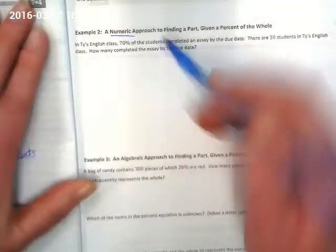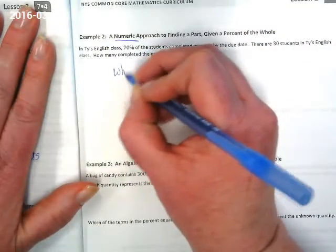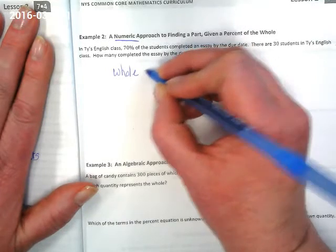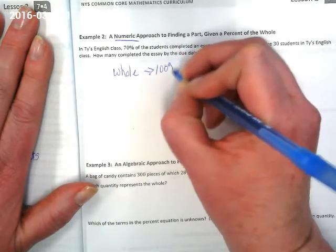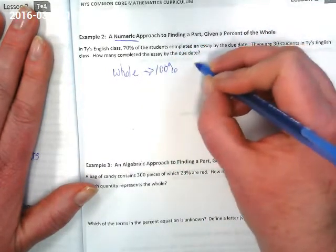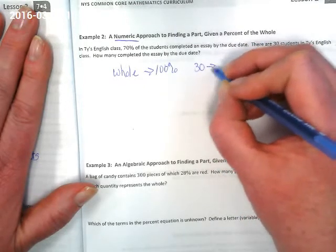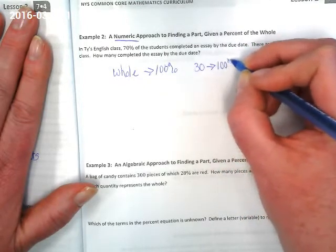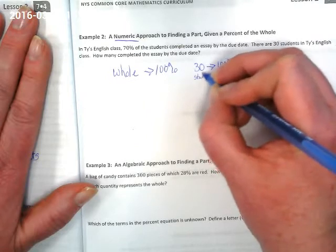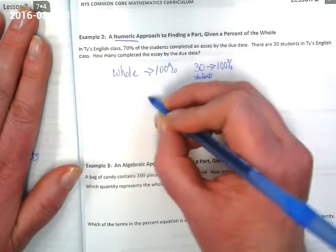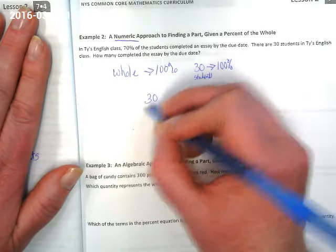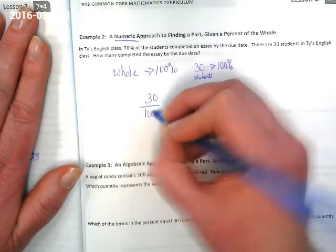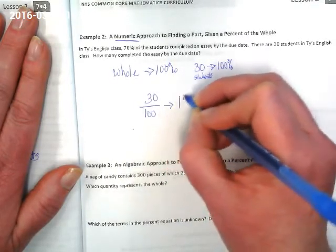Well, what do we know? We know that the whole is 100%, and we also know that the whole is 30 students. That 30 students equals the 100%. We could set this up as 30 over 100 and try to find what 1% is.